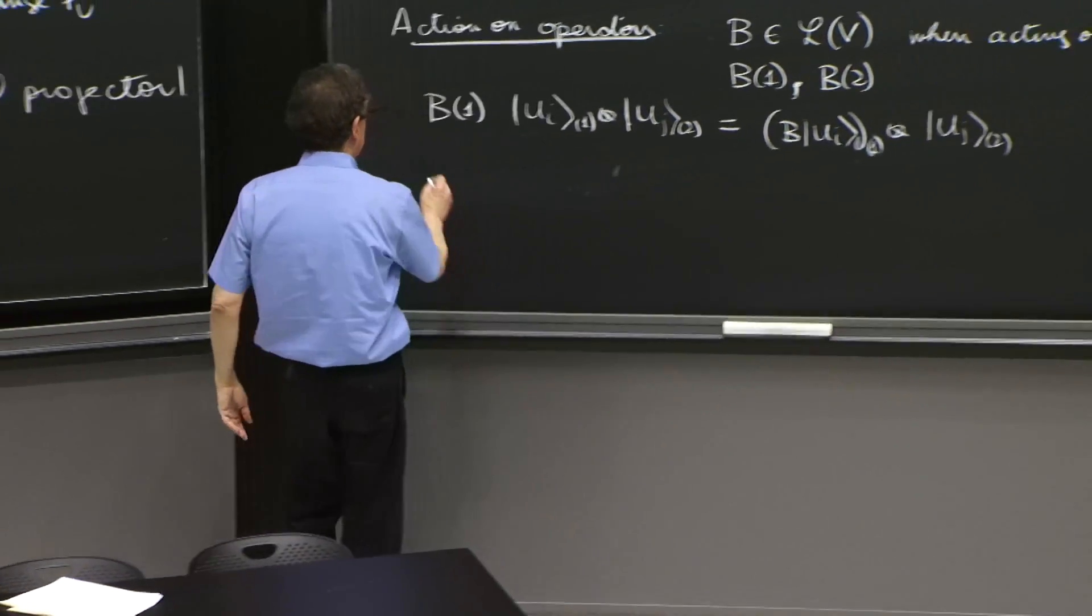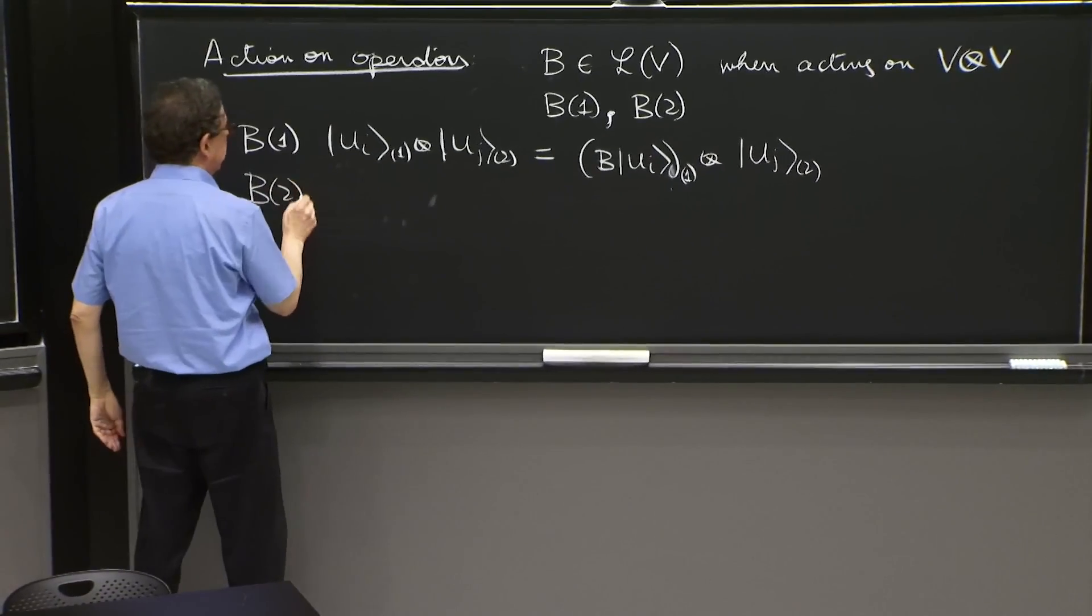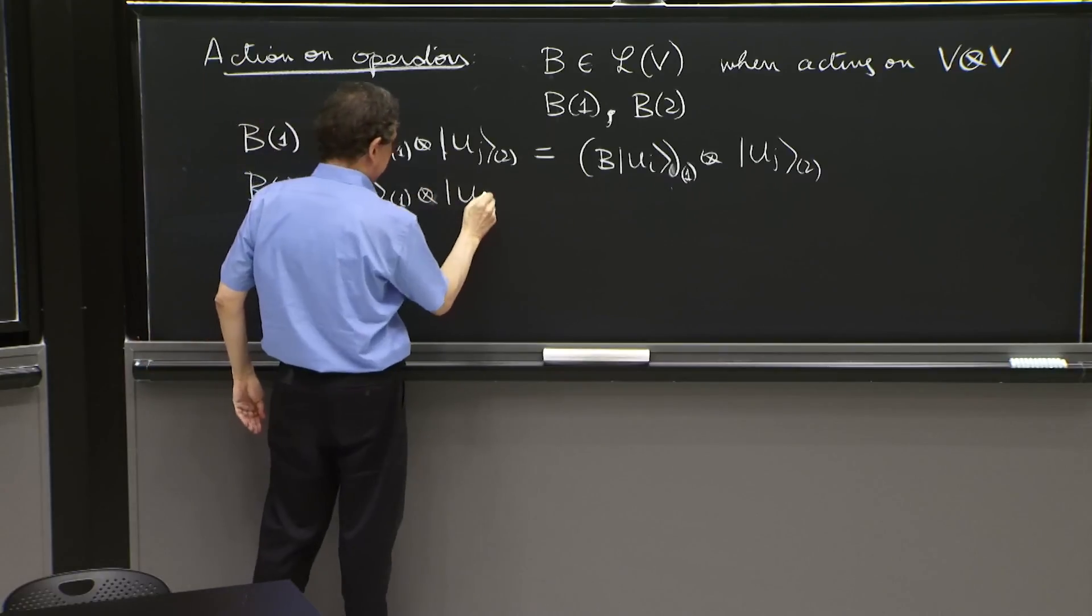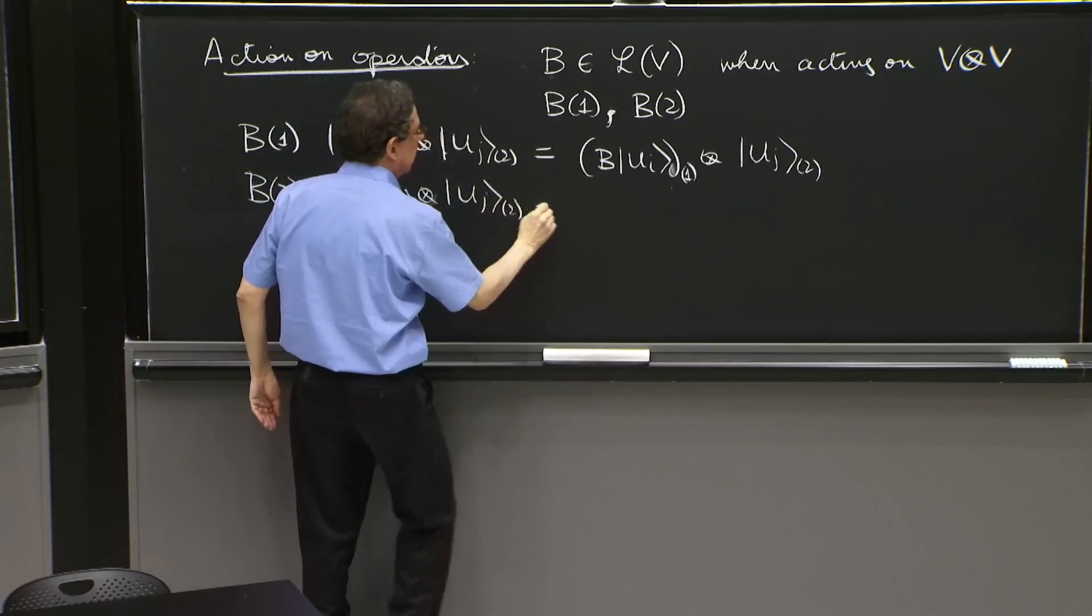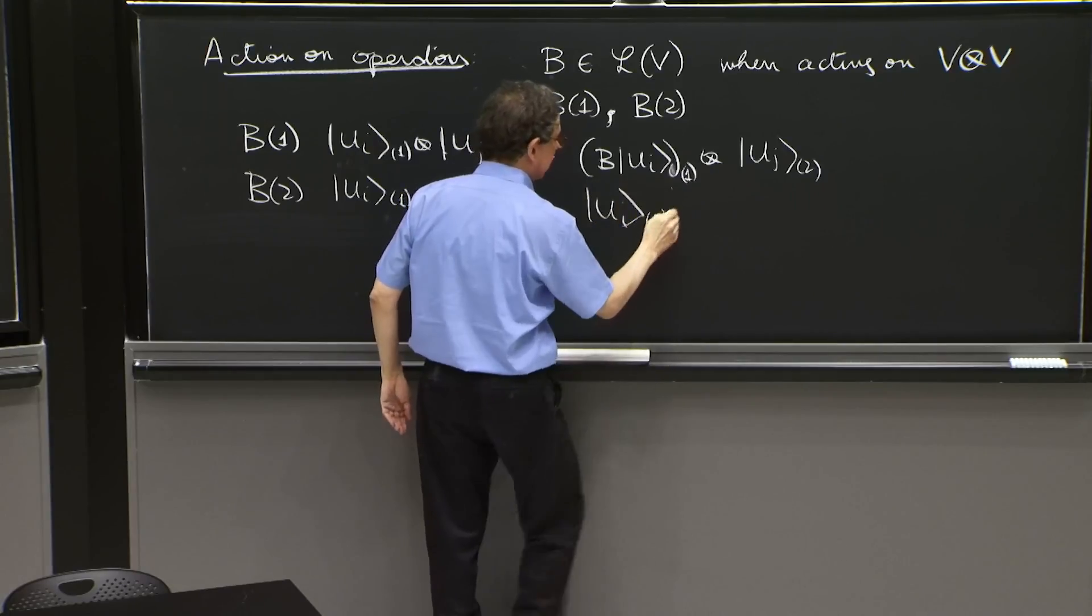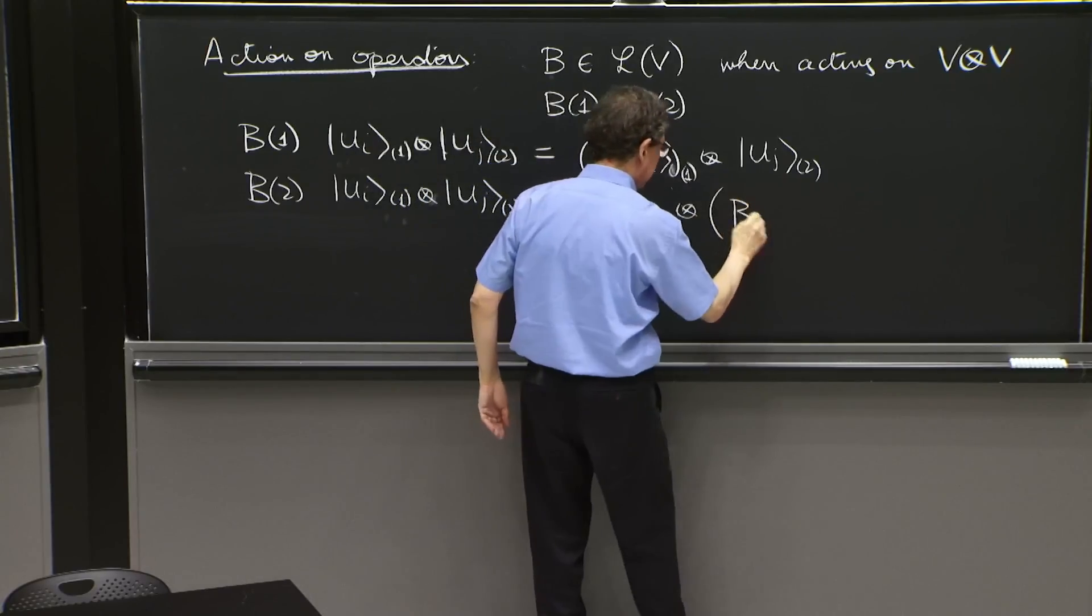Similarly, if you have B2 of Ui tensor Uj2, you have Ui1 tensor BUj2.